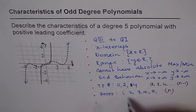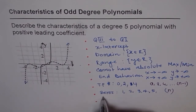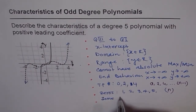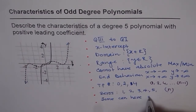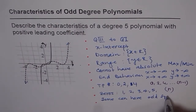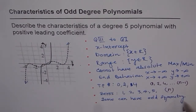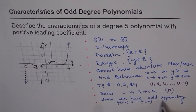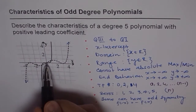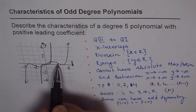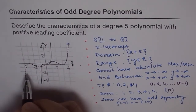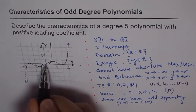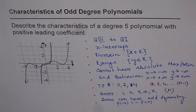Odd degree polynomials can sometimes — though not always — have odd symmetry. Odd symmetry means f(−x) = −f(x), which means the function is symmetric about the origin. As shown here in the dotted line graph, this polynomial has odd symmetry and is symmetric about the origin. These are the major characteristics of odd degree polynomials.